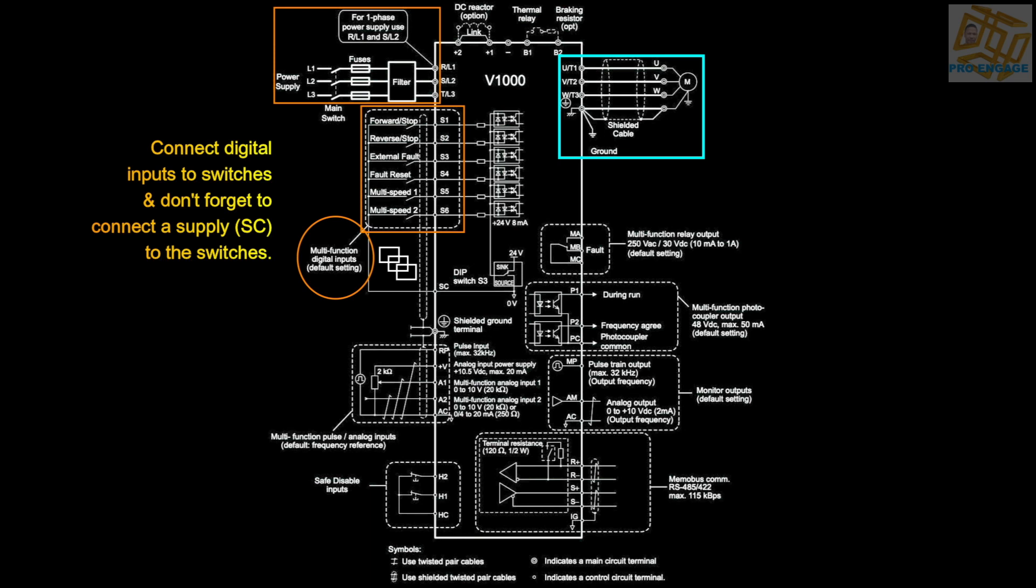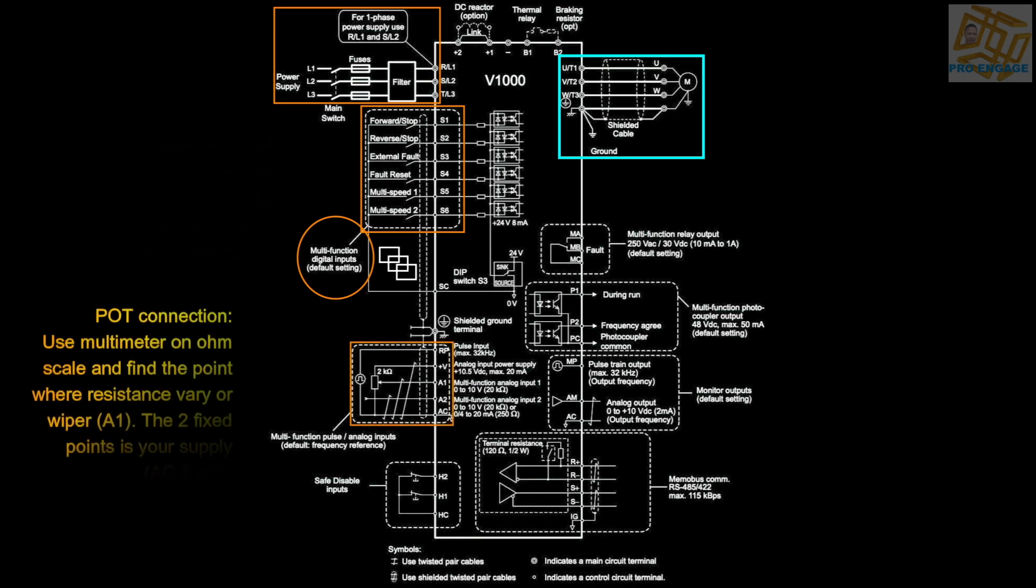We also have to connect the digital inputs to the actual switches. Like any other switch you need to have a supply for it, and that will be SC. There's a potentiometer to vary the speed of the motor, and we can do this by using a multimeter. A1 is very important, which is the wiper on the pot, and the two fixed points are for your supply.